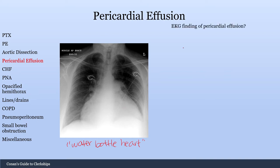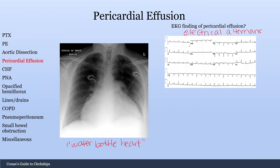What is an EKG finding of pericardial effusion? The answer is electrical alternans. You can see alternating QRS complexes of higher and lower amplitude — this electrical alternans pattern seen diffusely.